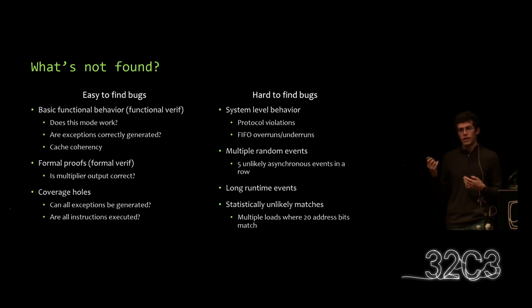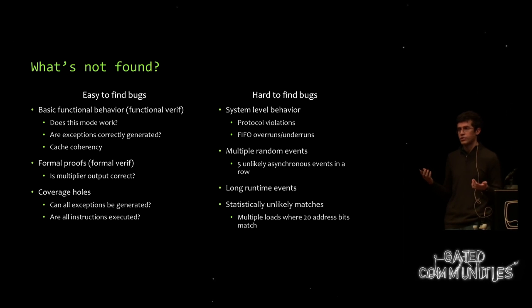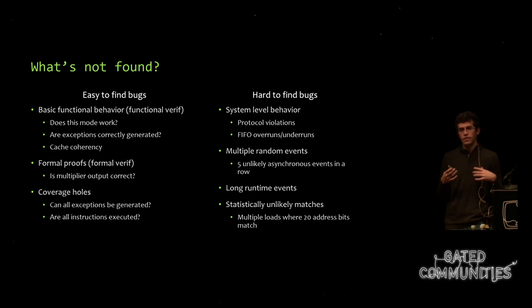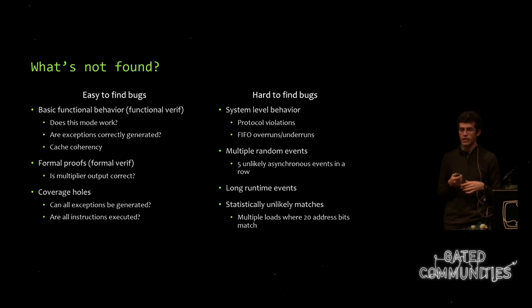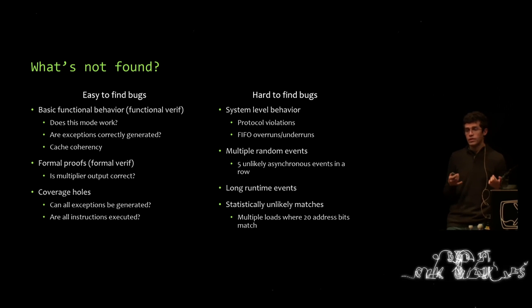Another thing that's difficult to find are long run-time events. Whenever you have a large data structure like an L3 cache, those are difficult to test in verification. A final thing I'll mention is what I'll call statistically unlikely matches. Imagine you have a design with special behavior when two different memory operations have their lower 20 bits match but the upper bits do not. If you're generating all addresses randomly, the chance of that happening is really, really small, and you're not going to get a lot of test time on it — those bugs are going to slip through.